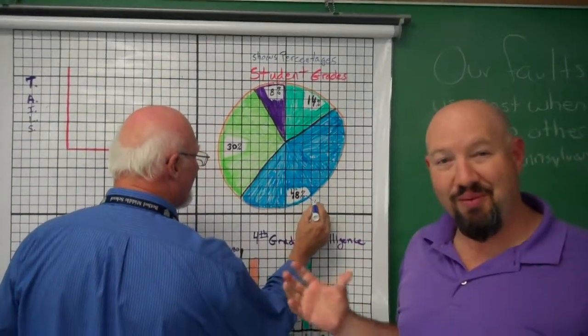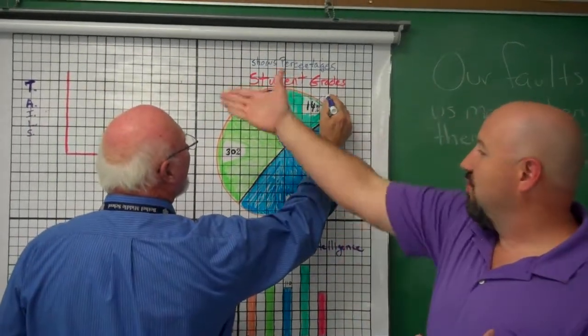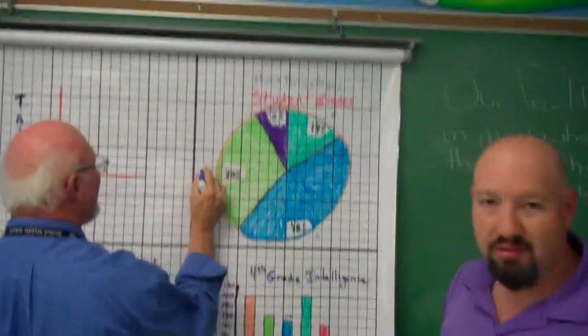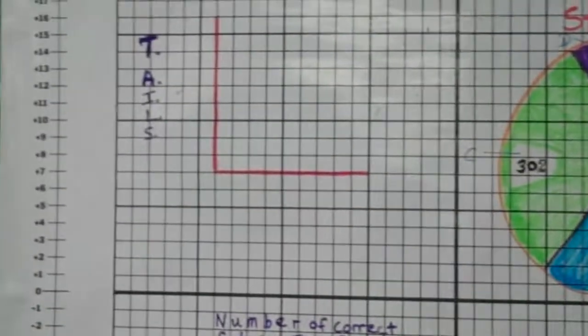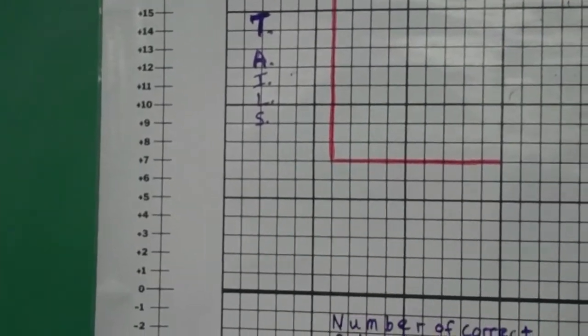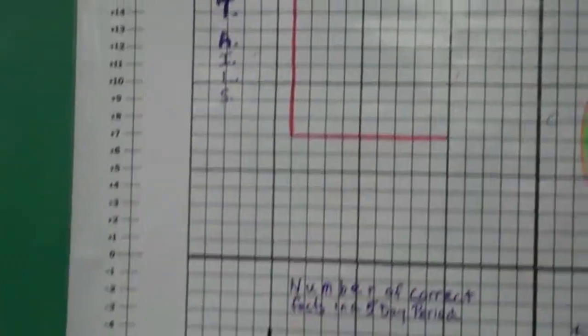So when you double check your work, make sure you have labels. That's why we have the acronym TAILS. We're not talking stories. We're not talking about that kind of tales. Or anything that's, well, I don't have a tail.